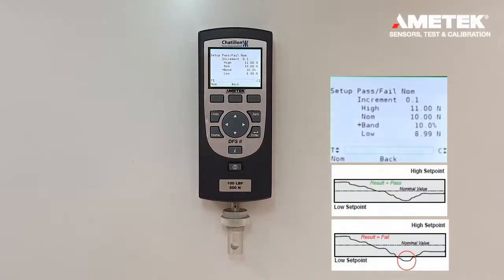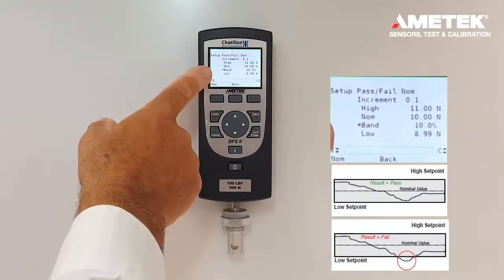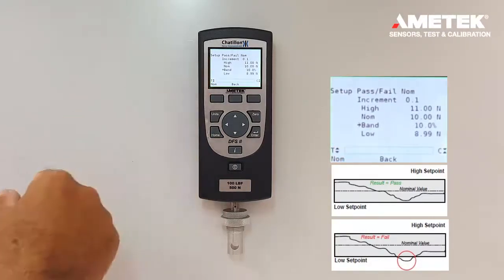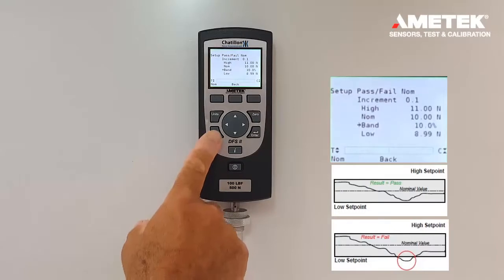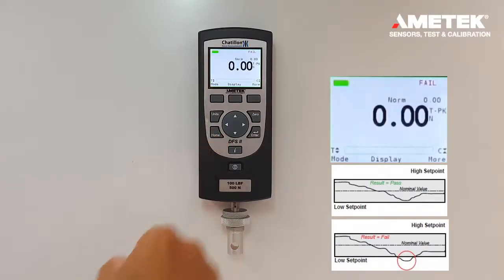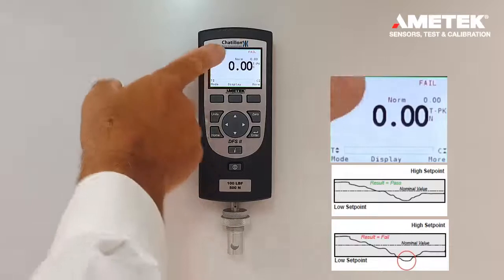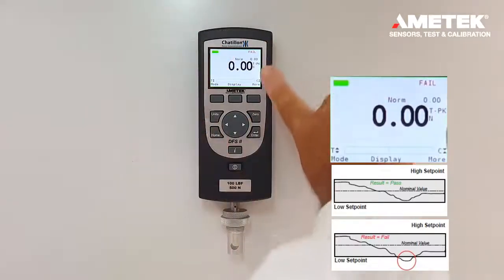Okay, so basically we have a nominal value of 10 newtons, a band of plus or minus 10% of 10 newtons. So this puts us at 9 newtons or 11 newtons. Now let's go back to the home button, the home screen. Press the home button twice, brings us back to the home screen. Let's zero everything and now we can watch our nominal value here and the peak.